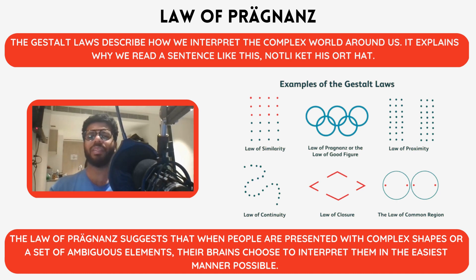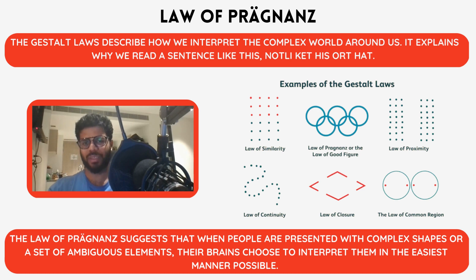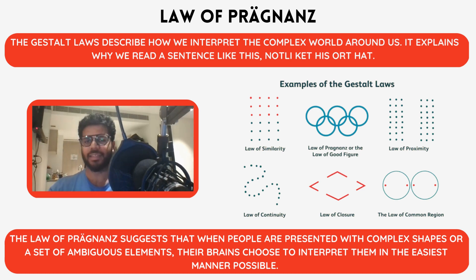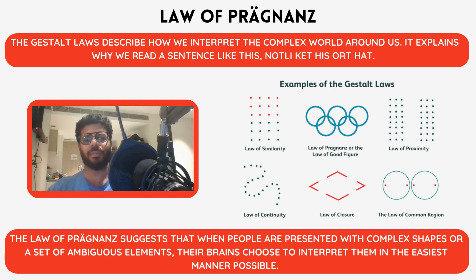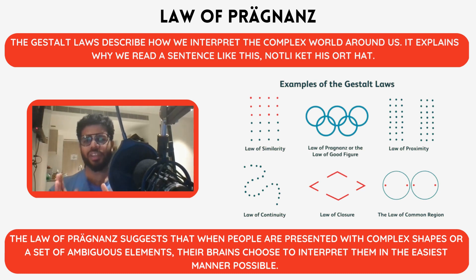their brain chooses to interpret them in the easiest manner possible. When presented with the Olympics logo, when you look at the image, you see overlapping circles rather than an assortment of curved connected lines. Prägnanz is essentially a German word that means conciseness and orderliness. It tells us that people can perceive things as a whole or a sum of simple parts.